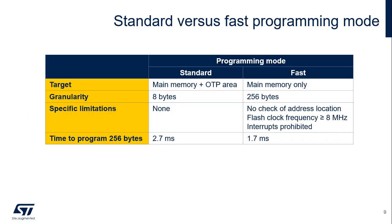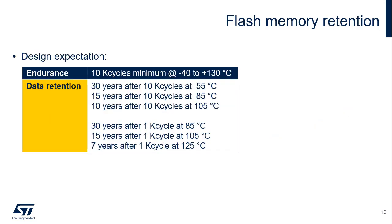This table summarizes the differences between standard and fast programming. Each program and erase operation can degrade the flash memory cell. After an accumulation of program and erase cycles, memory cells can become non-functional, causing memory errors. Endurance is the maximum number of erasing and programming sequences that the flash memory can support without affecting its reliability. Data retention is defined as retaining a given data pattern for a given amount of time. The retention depends on the number of program and erase cycles and also on the temperature.